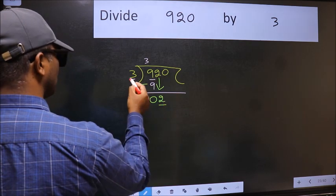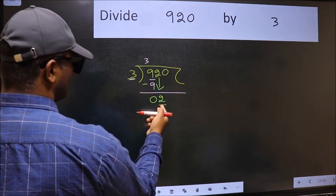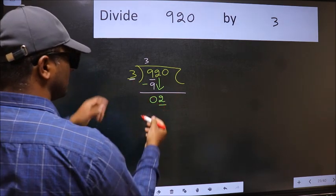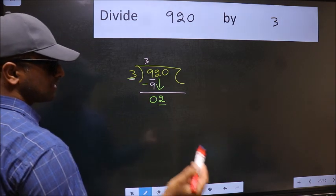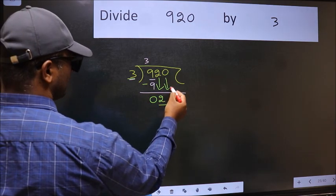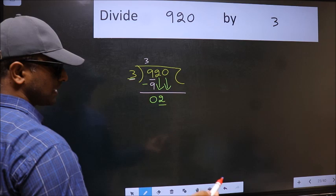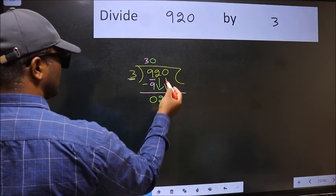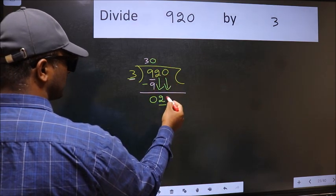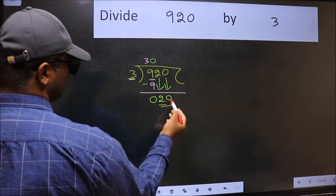Now here we have 2 and here 3. 2 is smaller than 3. So we should bring down the second number. And the rule to bring down second number is we should put 0 here.